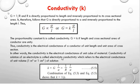For a solution, conductivity is called electrolytic conductivity, which refers to the electrical conductance of a unit volume of solution. Combining the equations, the value of K equals G multiplied by L/A, which is also equal to (1/R) × (L/A).